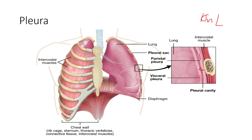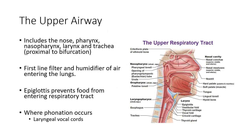The next major landmark is the upper airway, also referred to as the upper respiratory tract. The goal of the upper respiratory tract is to humidify, filter, and warm the air to an appropriate temperature. This includes the nose, nasopharynx, larynx, and trachea proximal to the bifurcation, which occurs at the angle of Louis at roughly the second rib. It's a first-line filter — our lungs really do prefer clean, warm, and humidified air. That's really the job of the upper airway: to provide that quality of air to the lower respiratory tract where gas exchange occurs.